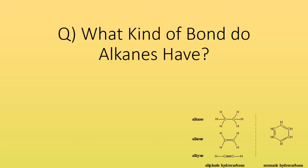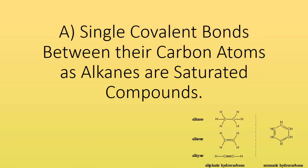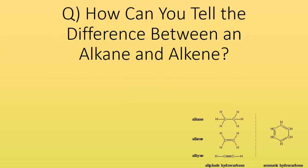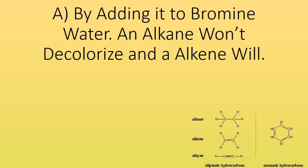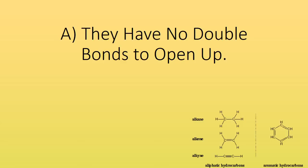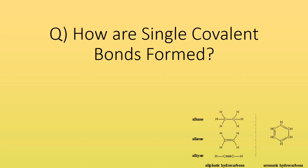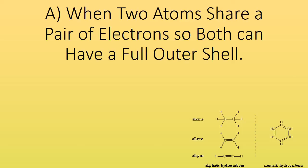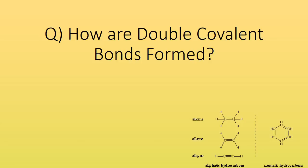What kind of bond do alkanes have? Single covalent bonds between their carbon atoms, as alkanes are saturated compounds. How can you tell the difference between an alkane and an alkene? By adding it to bromine water — an alkane won't decolourise it and an alkene will. Why won't alkanes form polymers? They have no double bonds to open up. How are single covalent bonds formed? When two atoms share a pair of electrons so both can have a full outer shell.